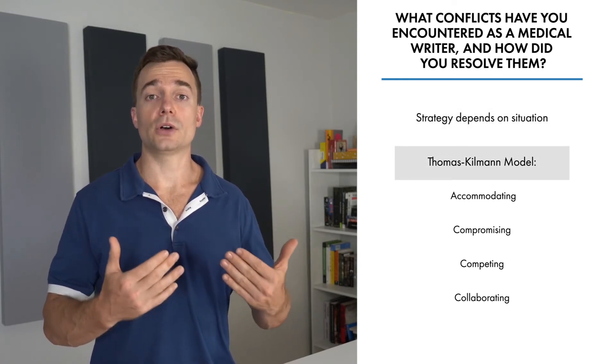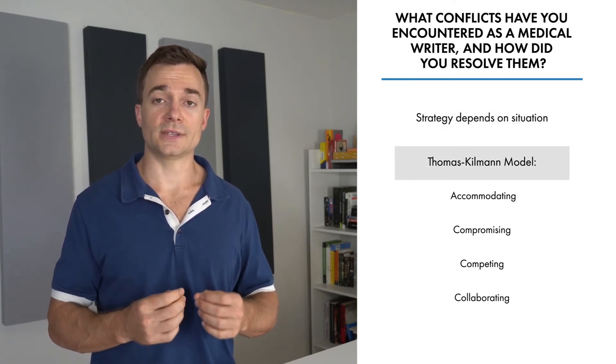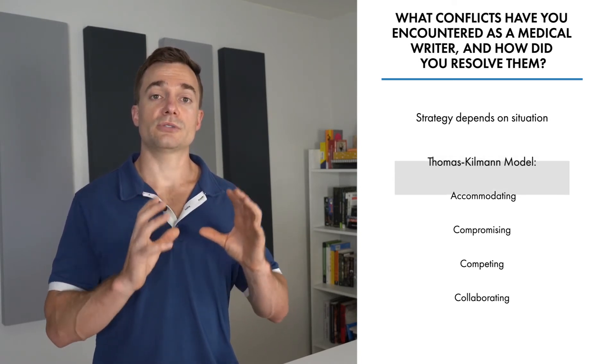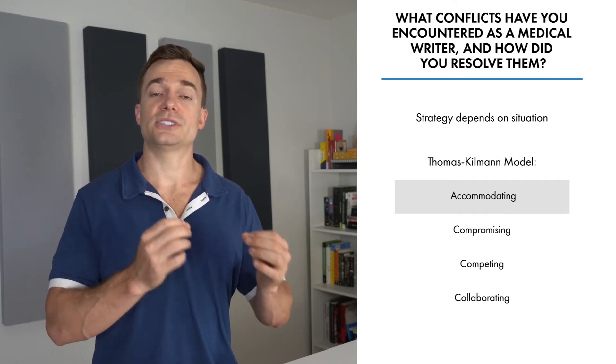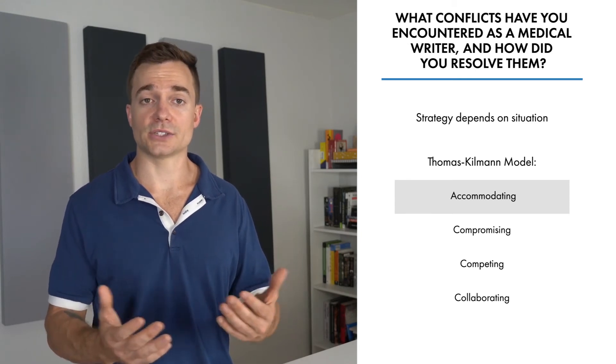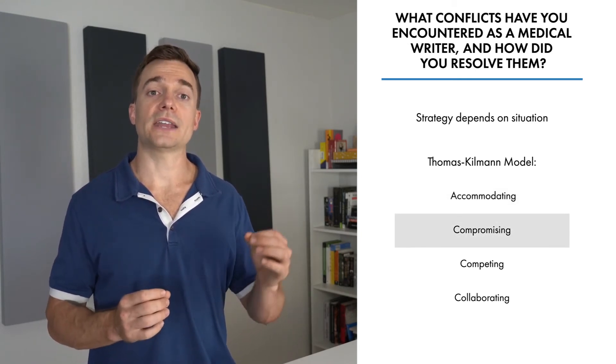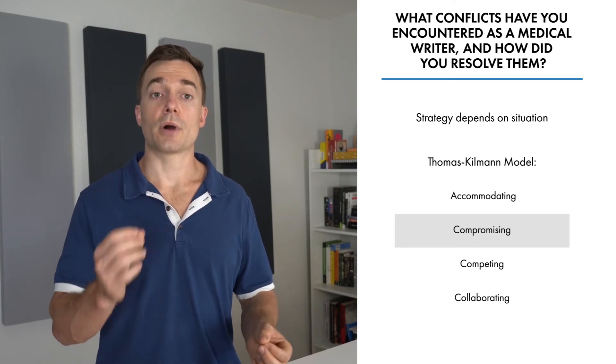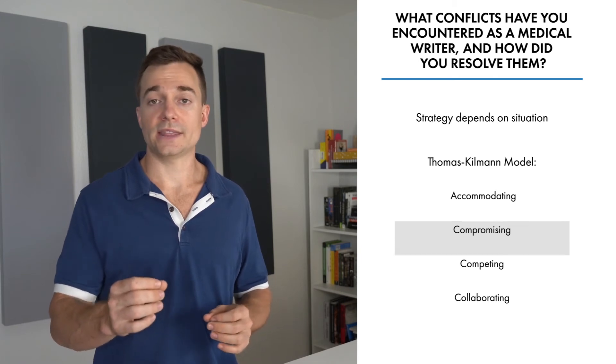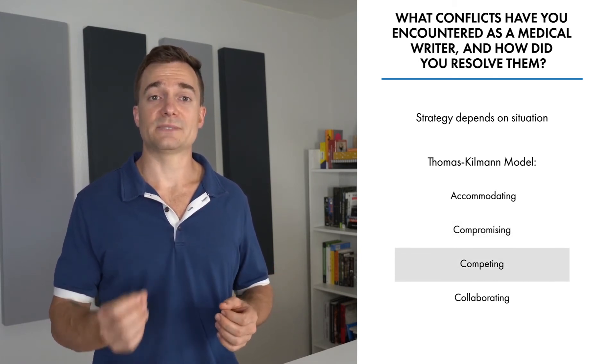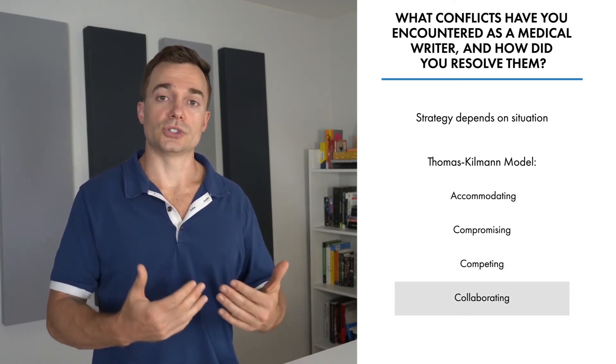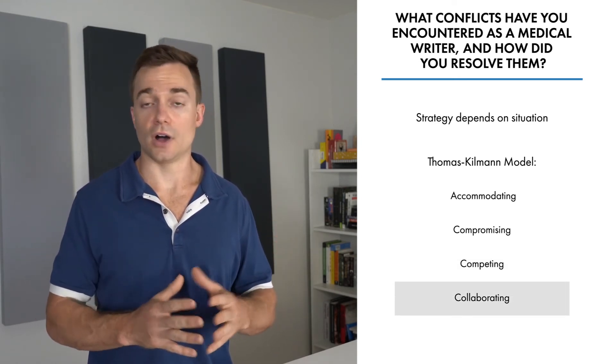The Thomas-Kilmann model identifies the following approaches to conflict resolution, and this is a model that you can bring up in your interview process. It starts with accommodating, taking steps to satisfy the other party's concerns or demands at the expense of your own needs or desires. Then we have compromising, which involves finding an acceptable resolution that will partly, but not entirely, satisfy the concerns of all parties involved. We have competing, satisfying your desires at the expense of the other parties involved. And we have collaborating, which involves finding a solution that entirely satisfies the concerns of all parties involved.